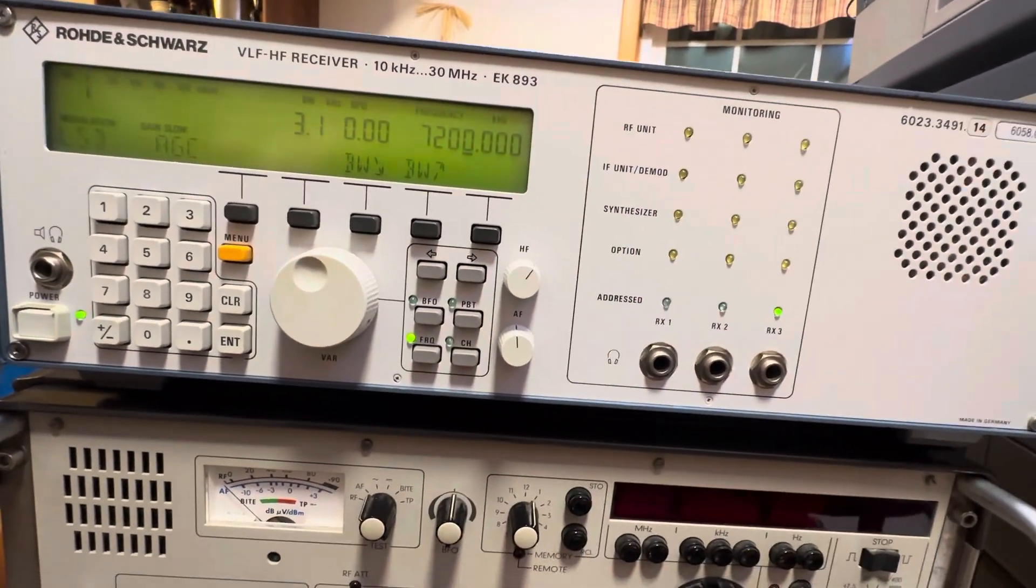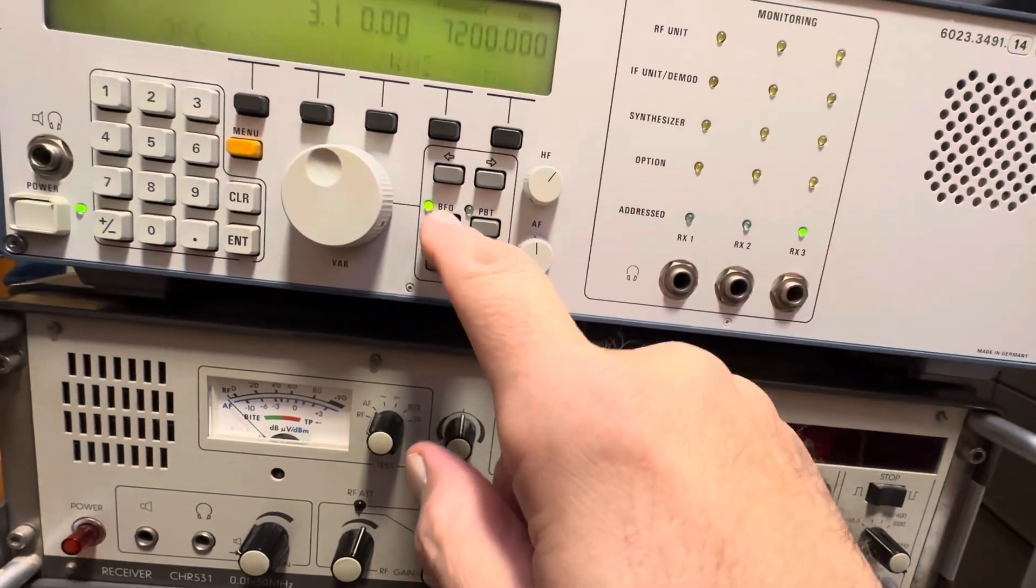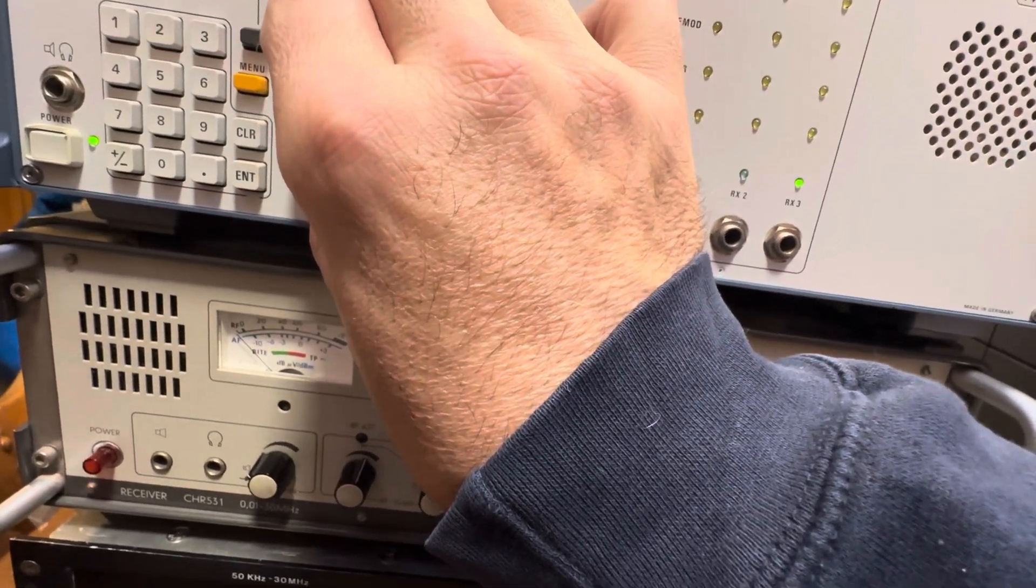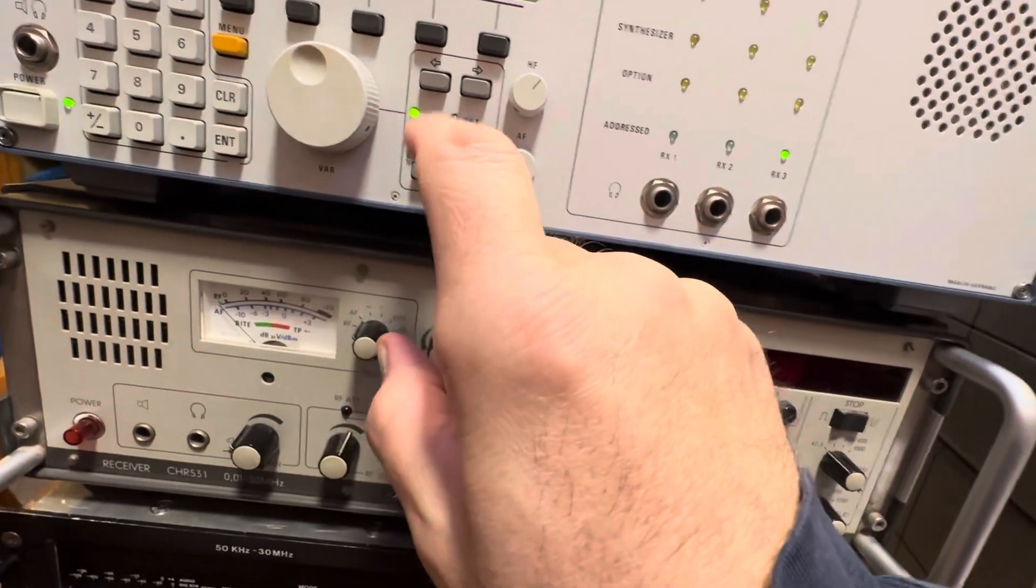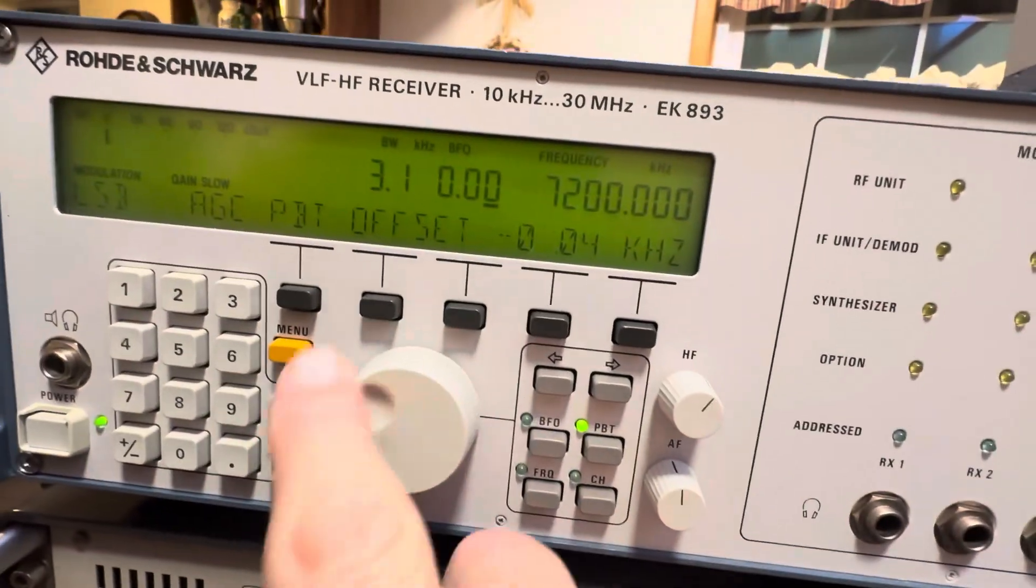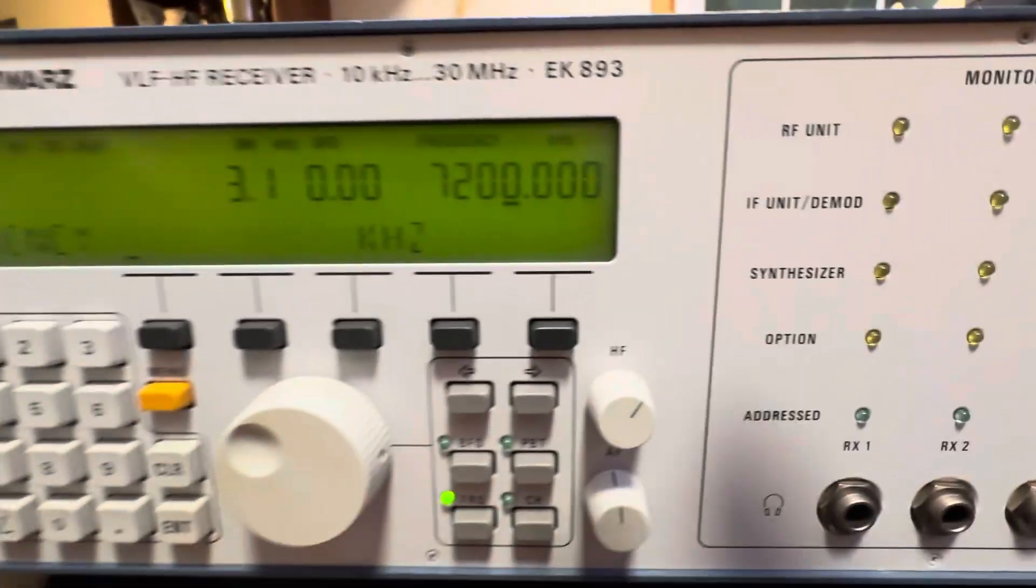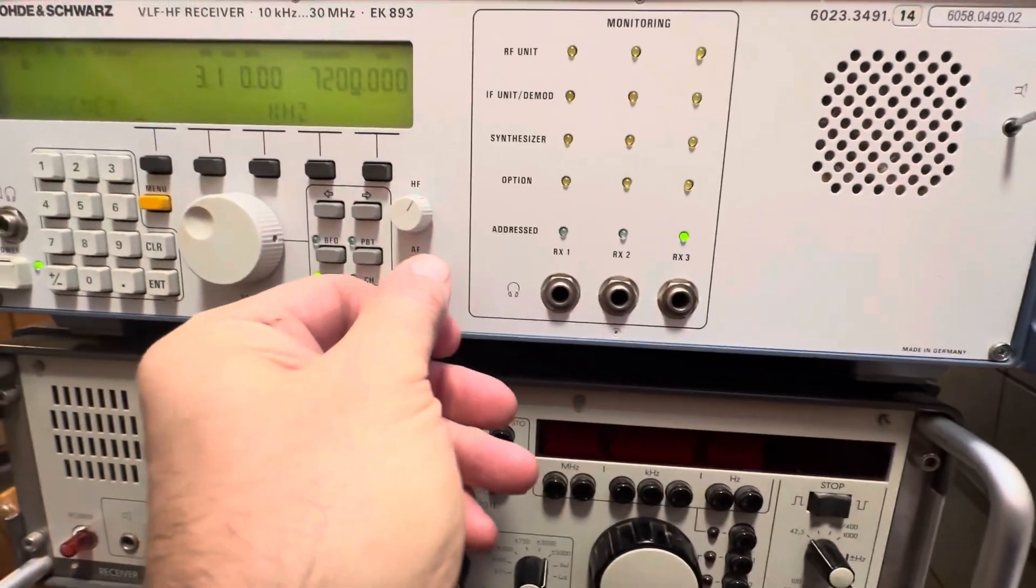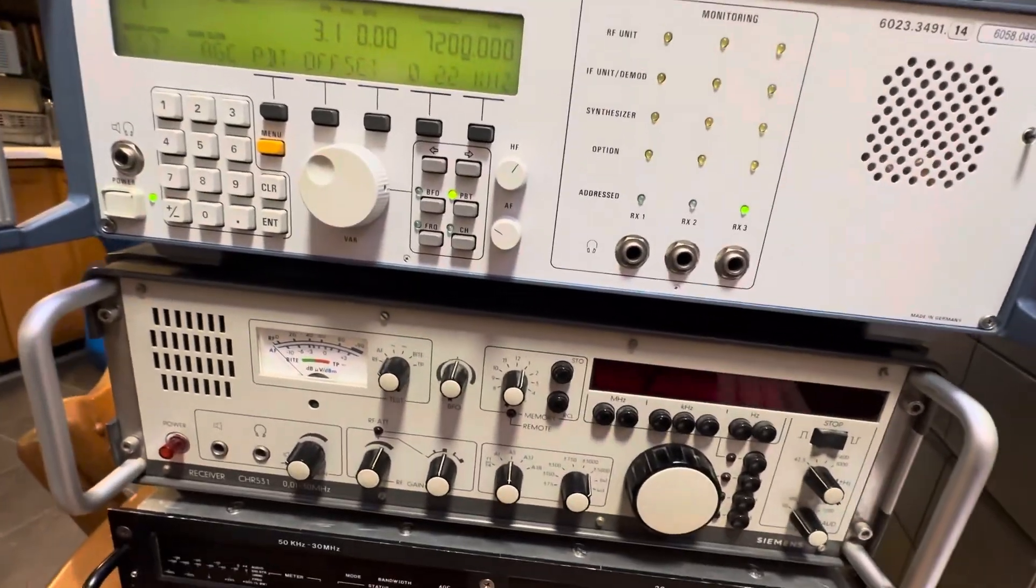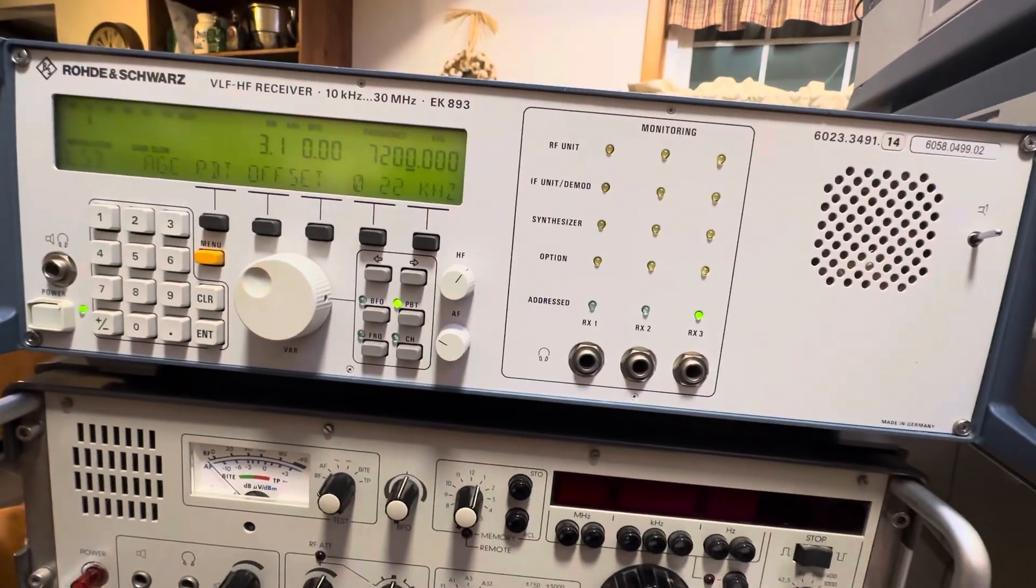On this one you could go to 3.1. If there was noise outside you wanted to mess with, you could go to BFO. You could also go to passband tuning. One of the things to keep in mind, I'll give you a little background and history of this since I do that on my shows.